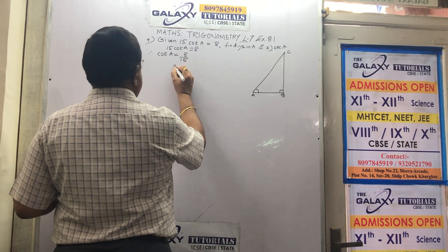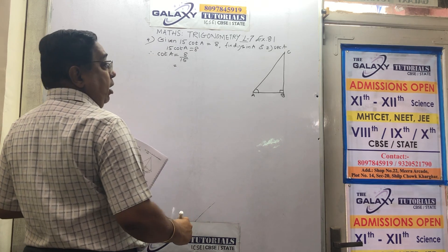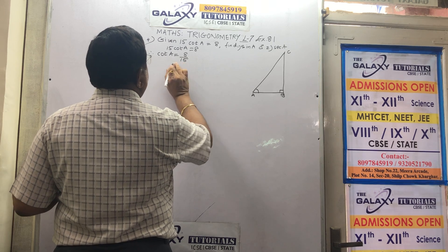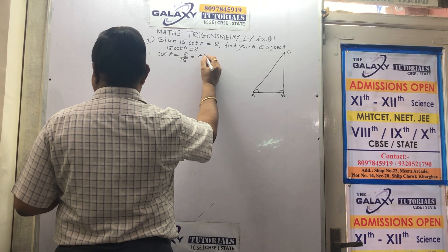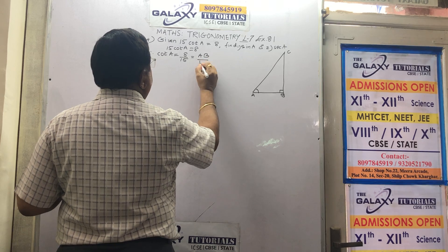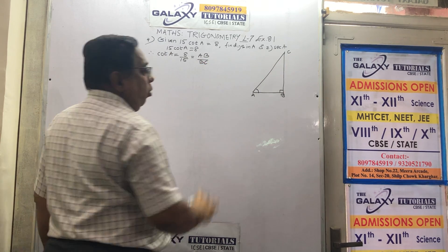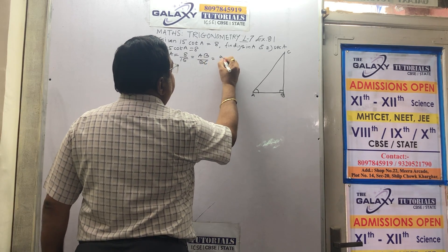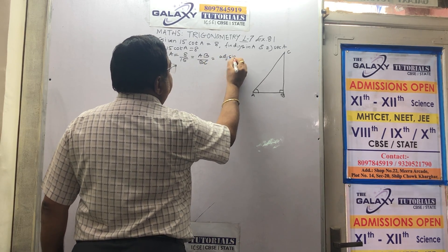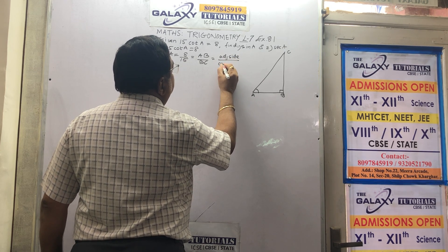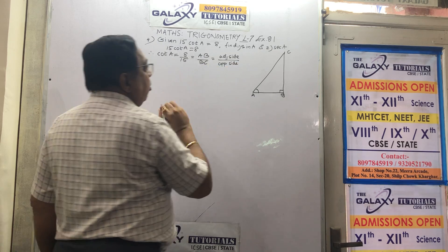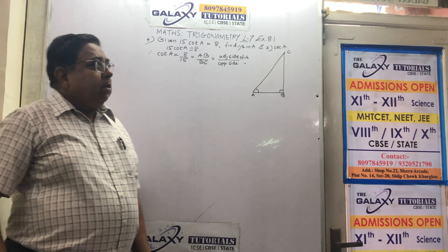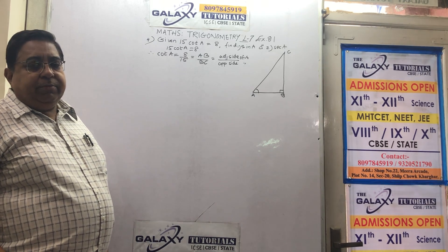Now, cot — we know cot A is the opposite of tan, the inverse of tan. In our diagram, cot A equals AB upon BC, adjacent upon opposite, inverse of tan. Remember: adjacent side upon opposite side is cot A. Please look at angle A only. You can directly write AB divided by BC.